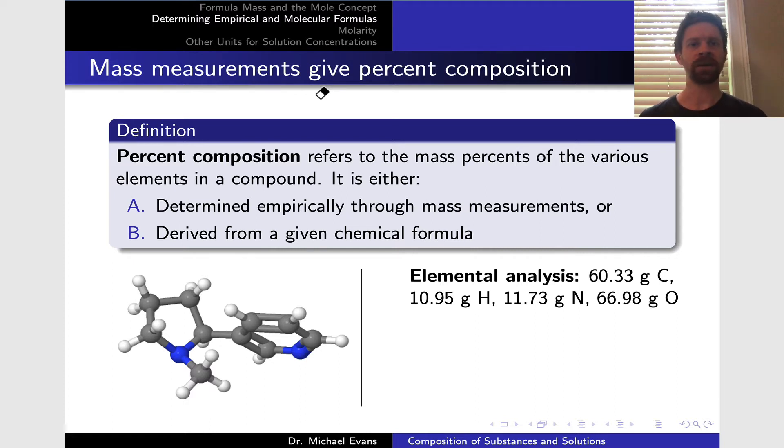To start, we're going to use the idea of the masses of the elements within a compound as pointing us to the empirical formula. We think about these masses as percentages because they're independent of the amount that's there. The percentage of carbon in a sample of morphine is the same no matter how much mass or moles of morphine we're looking at. We can use percent composition to get to the empirical formula or the other way. Percent composition refers to the mass percents of the various elements in a compound.